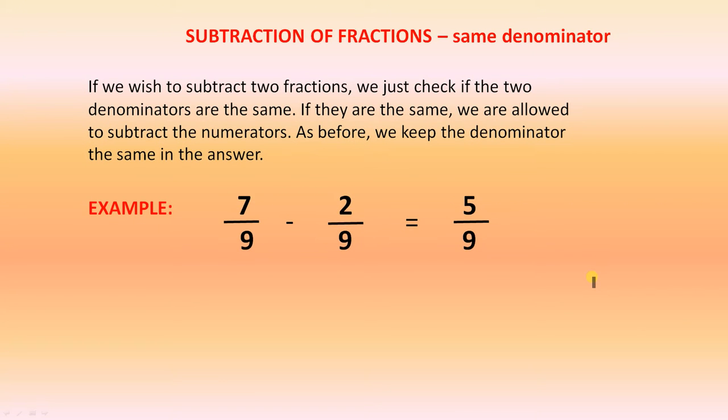Subtraction of fractions. Subtraction of fractions with the same denominator. If we wish to subtract two fractions, we just check if the two denominators are the same. If they are the same, we are allowed to subtract the numerators. As before, we keep the denominator the same in the answer. Now each denominator here is 9, so we keep the denominator as 9. 7 take away 2 gives you 5. So the answer is 5 over 9.